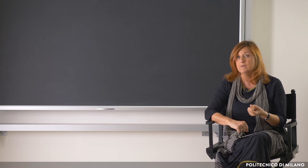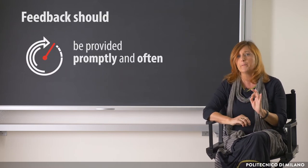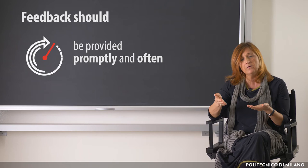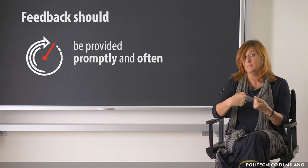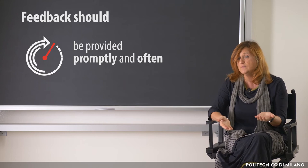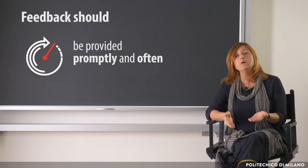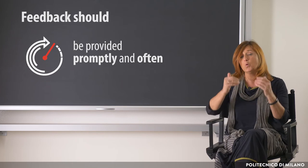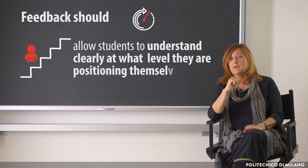To be effective, however, the feedback should have certain characteristics. First of all, it should be provided promptly and often. Often, because within the dynamic of teaching and learning, the students should try to give a performance, to which the teacher then should provide feedback. Promptly, because when I carry out a task, a problem, a presentation, or any kind of performance in a given moment, receiving feedback very late doesn't allow me to understand if the learning process is following the proper path, so it should be offered often and quickly.